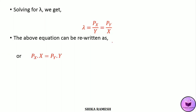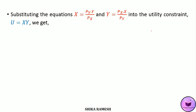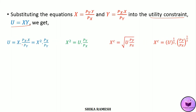Rewriting the equilibrium condition gives Px by Py equals y by x. Through cross multiplication we get Px times x equals Py times y. From this we solve: y equals Px by Py times x, and x equals Py by Px times y. Substituting these into the utility constraint u equals xy, we can derive the Hicksian demand for good x and y. Substituting in the place of y, we get u equals x times Px by Py times x.